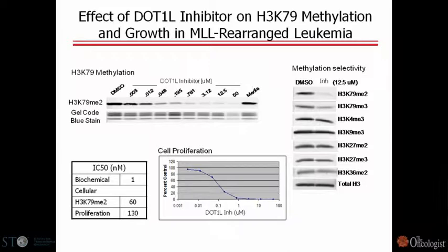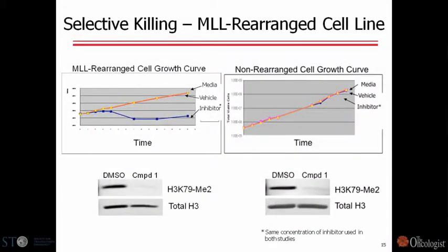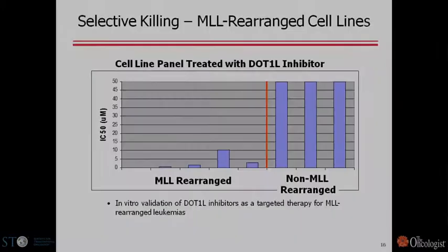This diminution in methyl mark translates into an anti-proliferative effect, but that anti-proliferative effect only occurs in cells that contain the MLL rearrangement. We see very robust concentration-dependent inhibition of proliferation and driving cells into apoptosis for cell lines that contain the MLL rearrangement, but no effect on proliferation for non-rearranged cells, despite the fact that the compound gets in and affects the methyl mark. We have seen this in a variety of different MLL rearrangement and non-rearranged cell lines.